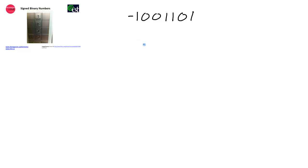The simplest way to do that is to make the most significant bit the sign bit. If that sign bit is a 0, then the number is positive. If that sign bit is a 1, then the number is negative.